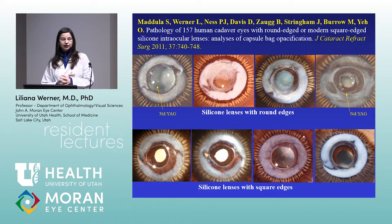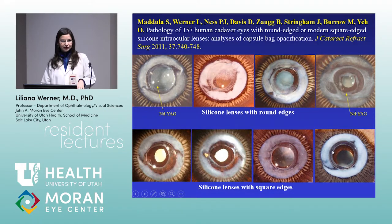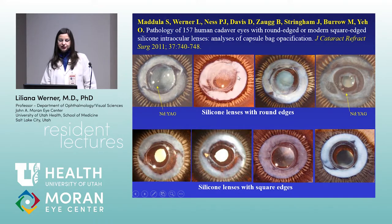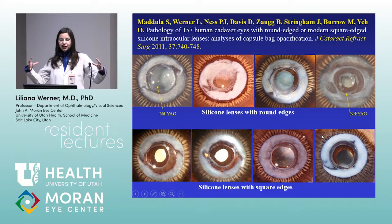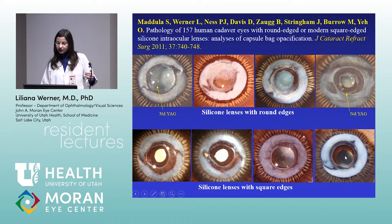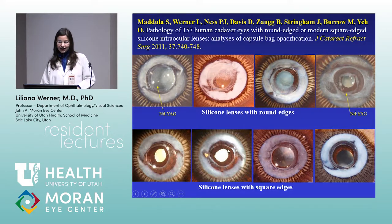The square edge is important regardless of material — there are very good silicone lenses with a very square optic edge that perform really well for PCO prevention. Here you can see round-edge IOLs with heavily opacified posterior capsule and a huge Soemmering's ring, versus a square-edge IOL where the posterior capsule is perfectly clear due to the barrier effect, with Soemmering's ring visible only at the equatorial region.